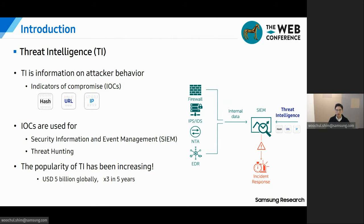For example, IOCs are used in security information and event management systems to identify ongoing intrusions. Also, it can be used in threat hunting, which typically involves an investigation of evidence-based data after there has been a warning of a potential threat. Even though it has limitations, such as inability to detect unknown malware, threat intelligence's popularity continues to increase.